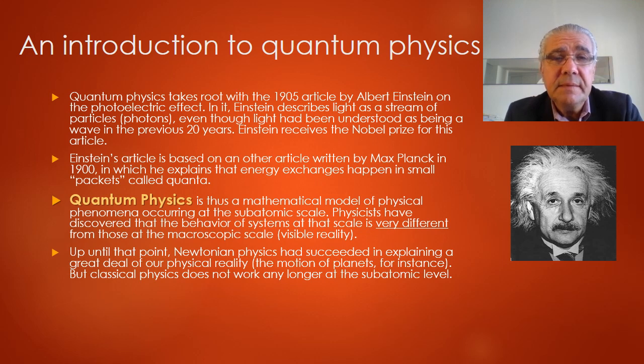Physicists have discovered that the behavior of this particular system at that scale is very different from those at the macroscopic scale, which is the scale of our visible reality. Up until that point, Newtonian or classical physics had succeeded in explaining most of our physical reality, for instance, the motion of planets. But classical physics does not work any longer at the subatomic level.